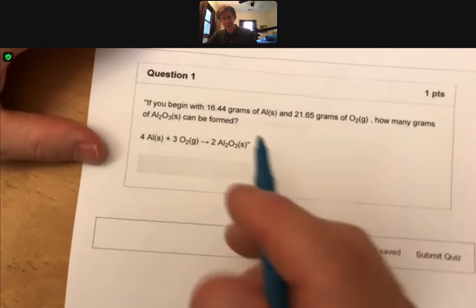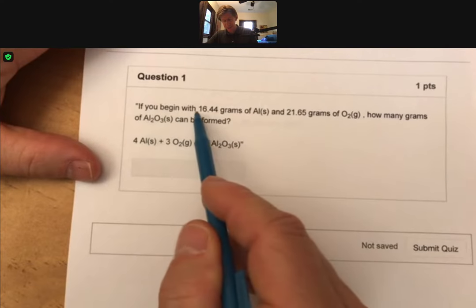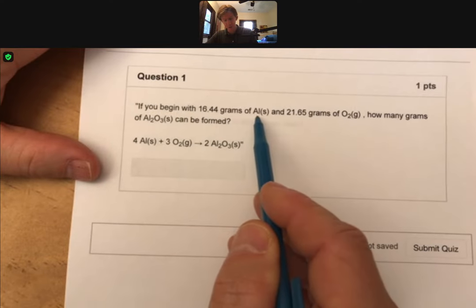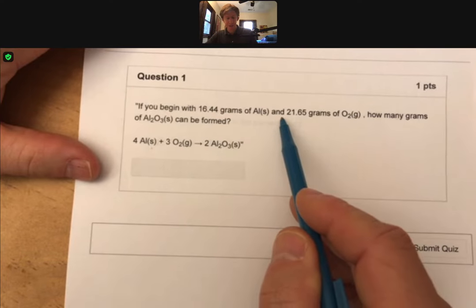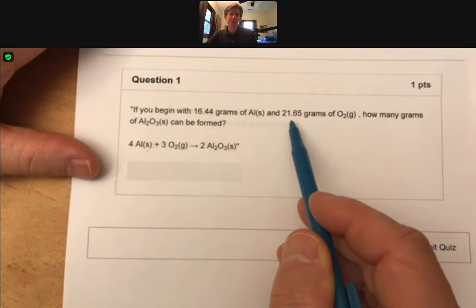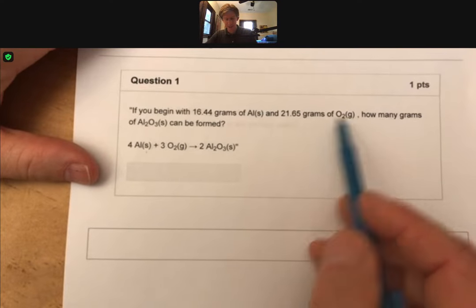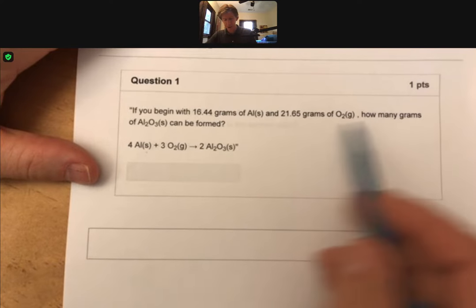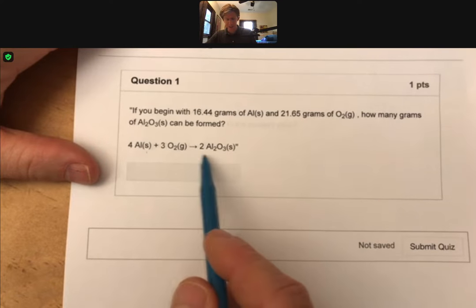Now, let's read the question. It says, if you begin with 16.44 grams of aluminum solid, one of our reactants, and 21.65 grams of oxygen gas, another one of our reactants, how many grams of aluminum oxide can be formed?